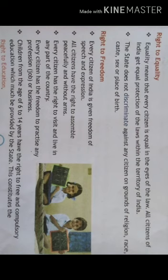Every citizen has the freedom to practice any profession or business. Profession means job — every citizen can choose their job as they wish. Children from the age of 6 to 14 years have the right to free and compulsory education, which must be provided by the state. This constitutes the Right to Education — that is, from 1st standard to 8th standard, all children must compulsorily study.